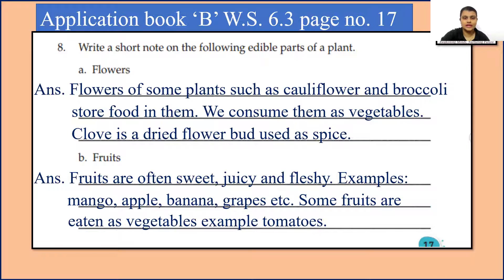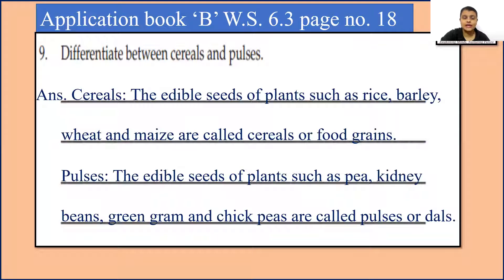We will move to question 9: Differentiate between cereals and pulses. Cereals — the edible seeds of plants such as rice, barley, wheat and maize are called cereals or food grains. Pulses — the edible seeds of plants such as pea, kidney beans, green gram and chickpeas are called pulses or dals.